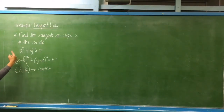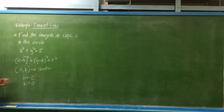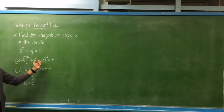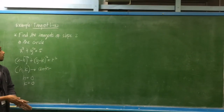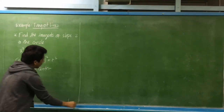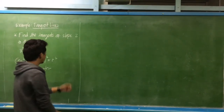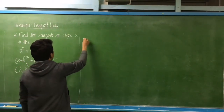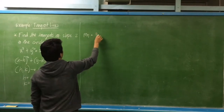For this case, x squared plus y squared is equal to 5, which means h is equal to 0 and k is also equal to 0. The center of this circle is on the origin. The given slope of the tangents we are looking for should be equal to 2.